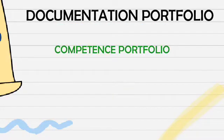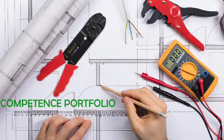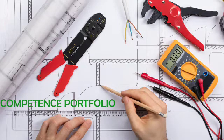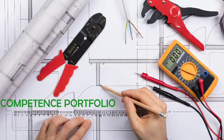The second one is the competence portfolio, and it shows the level of achievement reached in relation to the learning targets. An example is the mastery of each competency needed to do electrical work. Students would complete this kind of portfolio over the period of a unit or for the accreditation of prior experience or learning — for instance, doing electrical work to be credited inside or outside the university.